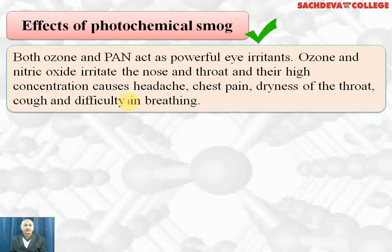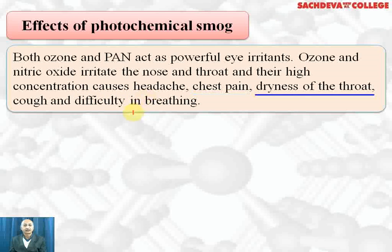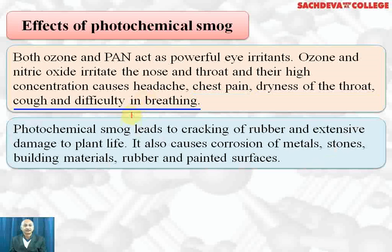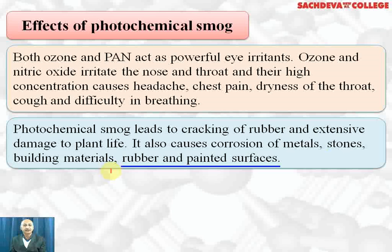Effects of photochemical smog: both ozone and PAN act as powerful eye irritants. Ozone and nitric oxide irritate the nose and throat, and at high concentrations may cause headache, chest pain, dryness of throat, cough and difficulty in breathing. Photochemical smog leads to cracking of rubber and extensive damage to plant life. It also causes corrosion of metals, stones, building materials, rubber and painted surfaces.